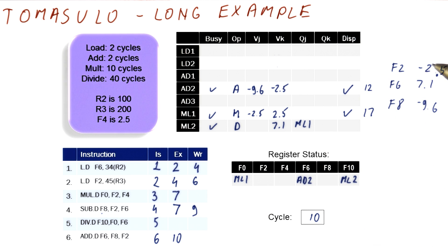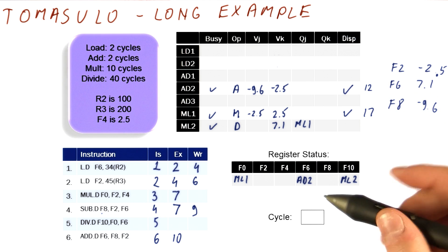So in cycle 12, it's going to try to write its result. So in cycle 11, nothing really happens other than the execution of these two instructions.